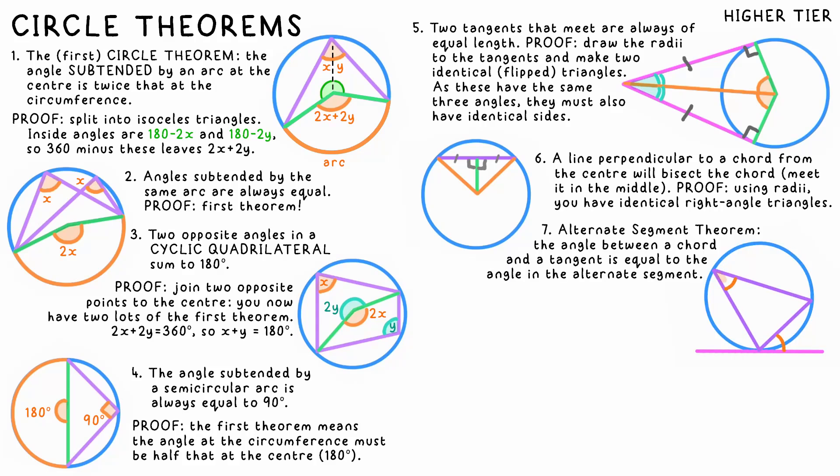And finally, the alternate segment theorem. The angle between a tangent and a chord is equal to the angle in the alternate segment. This proof might be the hardest, so here we go.